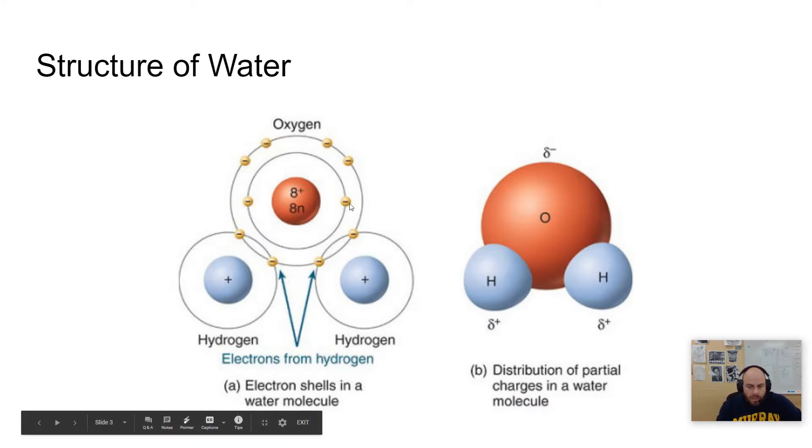Well, water is composed of a single oxygen atom and two hydrogen atoms. That oxygen atom is made up of eight protons and eight electrons. And each hydrogen atom has one proton and one electron.